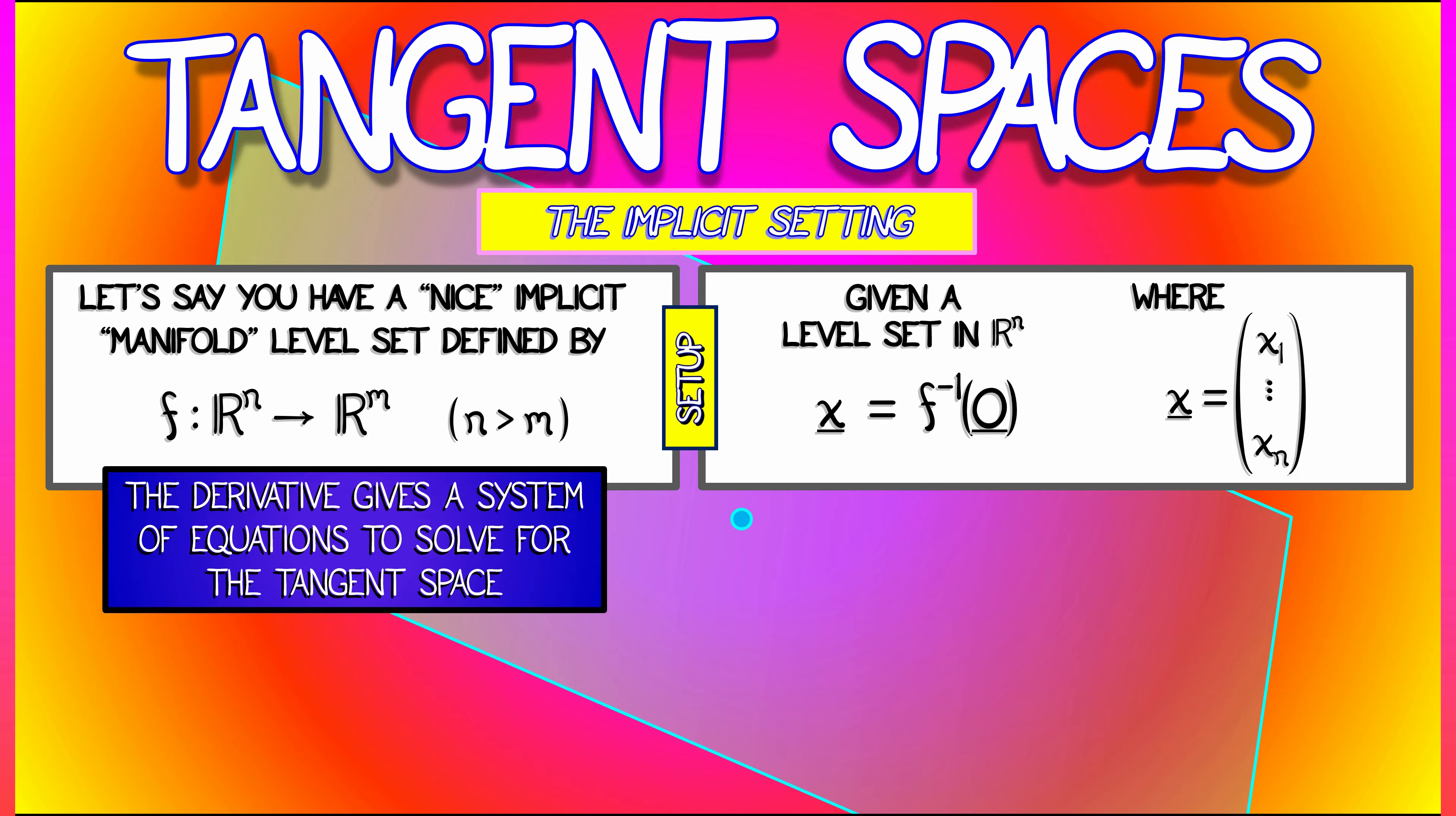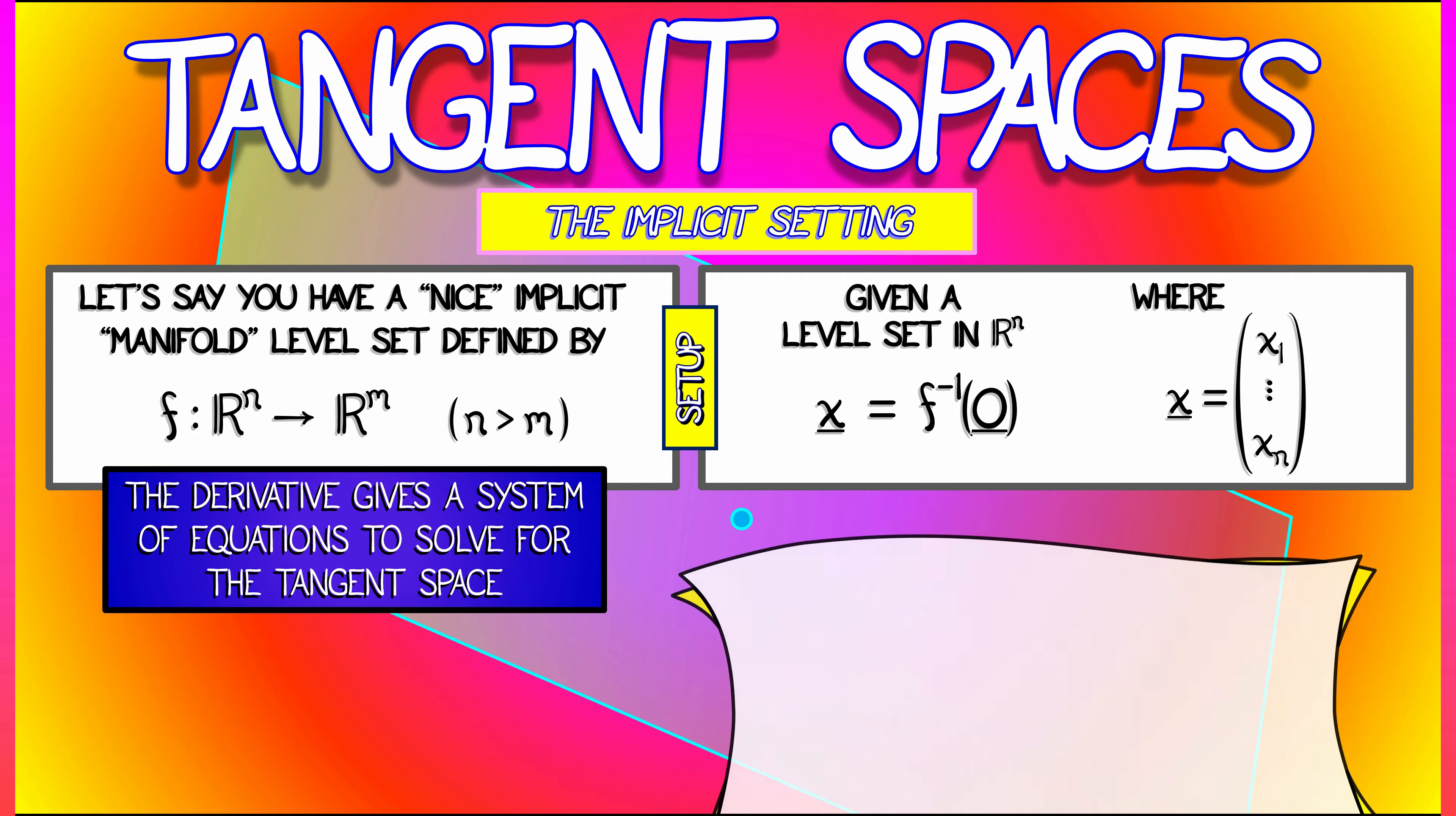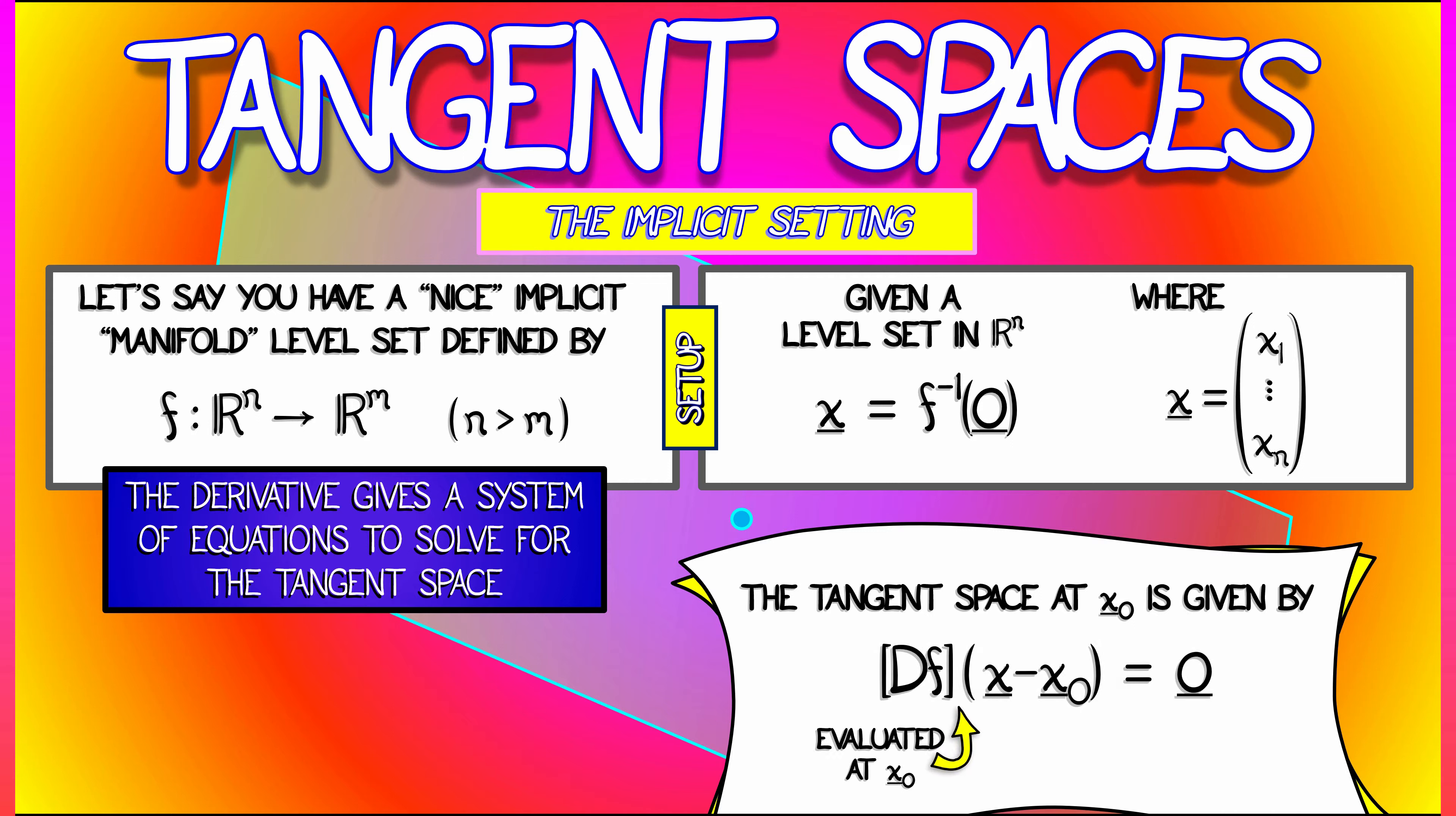The derivative of F gives you a system of equations to solve for the tangent space. The tangent space at X0 is given by the equation derivative of F evaluated at X0 times the vector X minus X0 equals zero. That looks kind of familiar. That is precisely the point-slope formula for a line in the plane or for a plane in three-dimensional space. This is the exact same equation we've been working with in the implicit setting.